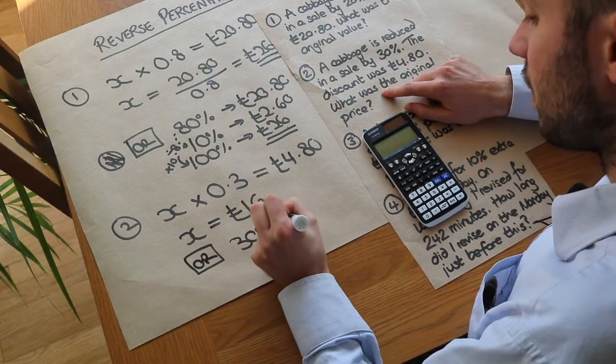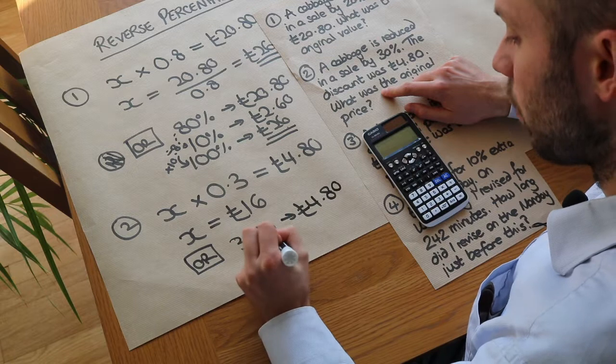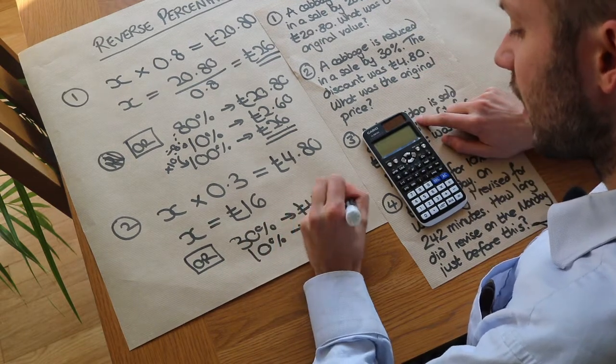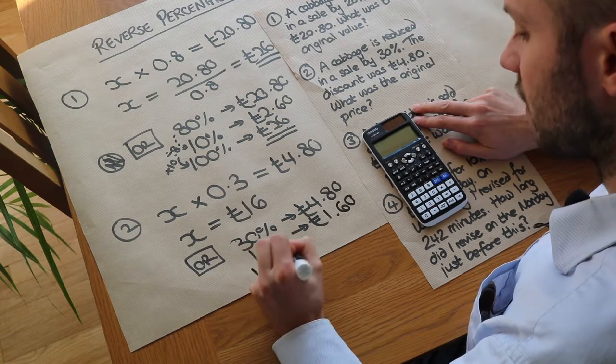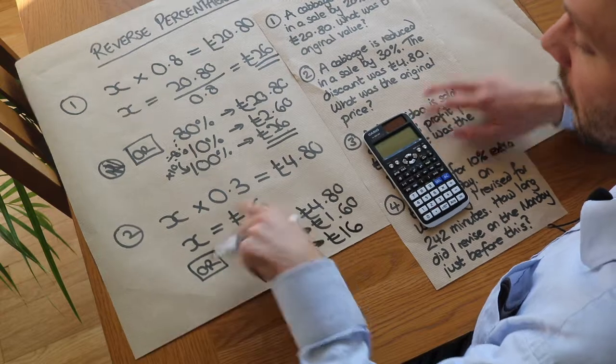So if 30% is £4.80, we then find 10% which is a third as much which is £1.60. And then you times by 10 to find 100% which is £16. We get the same answers here.